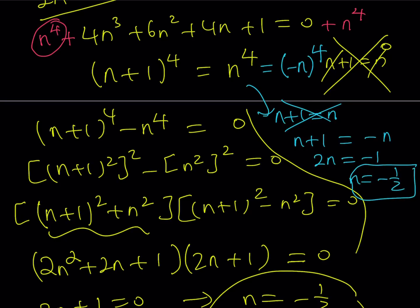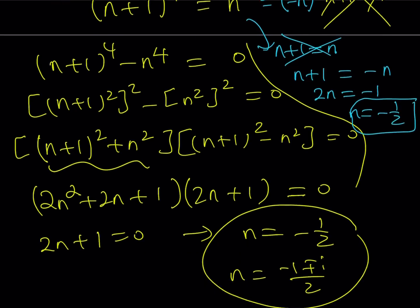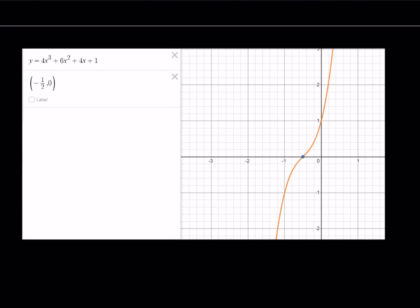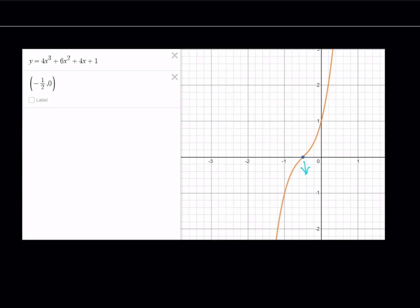And in addition to all of these things, I'd like to show you a graph of this function. Here's a beautiful cubic with only one real solution. The single solution occurs at n = -1/2. This brings us to the end of this video.